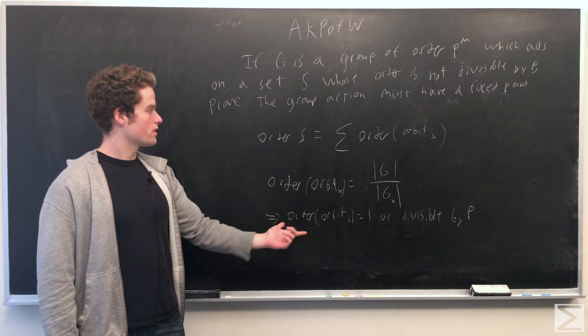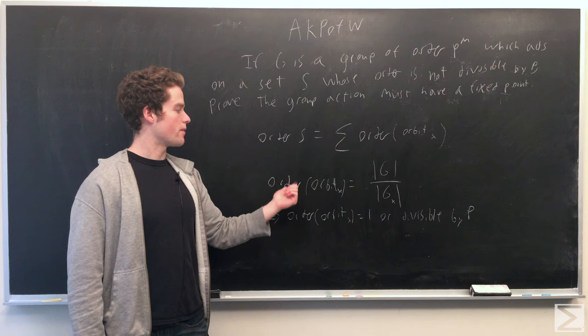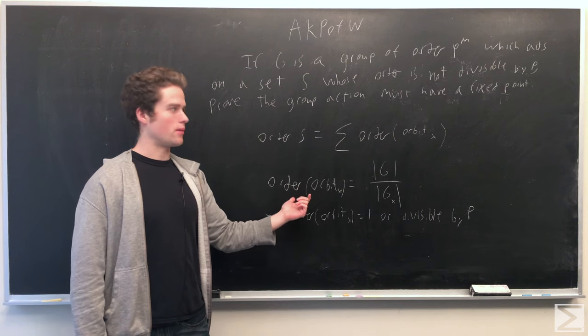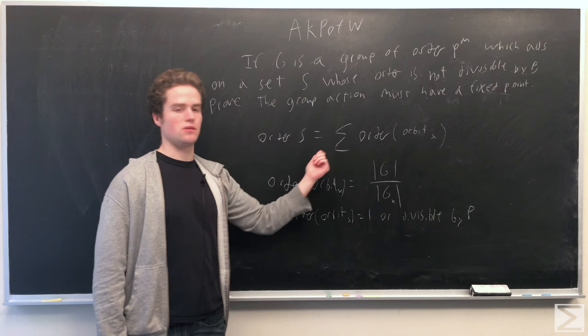And so since we have this equation, assume we have no fixed points. That means all the orbits are divisible by p. And when we sum it up, that means everything on the right side here must be divisible by p.